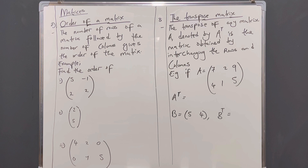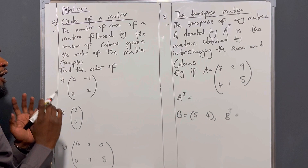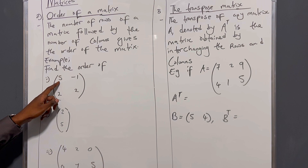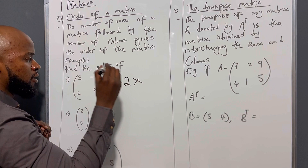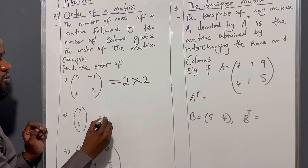Now let's move on to subtopic two: the order of a matrix. The number of rows followed by the number of columns gives you the order. For example, find the order of the matrix with elements 5, -1, 2, 2. How many rows? Two. How many columns? Two. So the order is two by two.